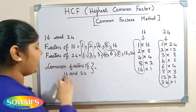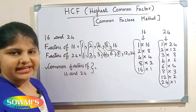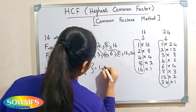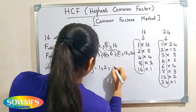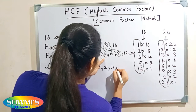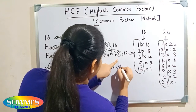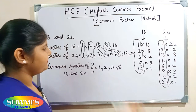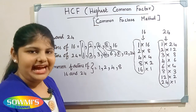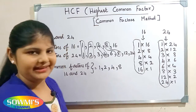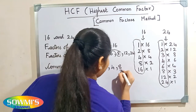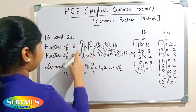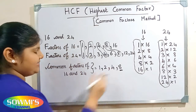So the common factors of 16 and 24 are 1, 2, 4, and 8. Now we have to find the HCF. To find the HCF, we have to find the highest common factor. Here the highest common factor is 8. So the HCF of 16 and 24 is 8.